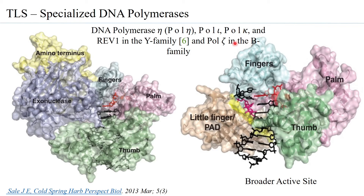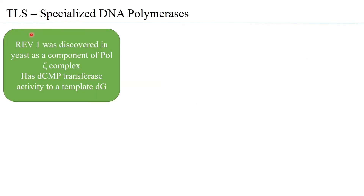Looking at a few specialized DNA polymerases and their characteristics: REV1 is a specialized DNA polymerase associated with TLS, discovered in yeast, found to be a component of the pol zeta complex. Interestingly, it has deoxycytosine monophosphate transferase activity — meaning it specifically adds dC using a template that has G.